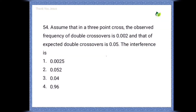In a three-point test cross, the observed frequency of double crossovers is 0.000002 and the expected double crossovers is 0.05. The interference — options are 0.0025, 0.052, 0.04, 0.96.